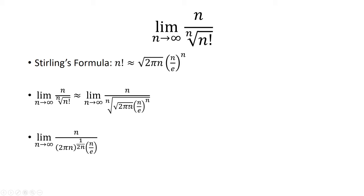So 2 pi n is already raised to the 1 half power because of the square root. And then you have the square root raised to the nth root. That just becomes 1 over 2 n. And then the n power and the nth root will cancel.